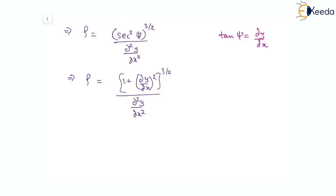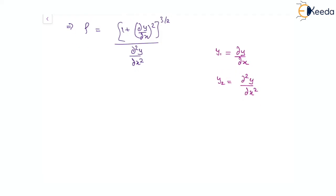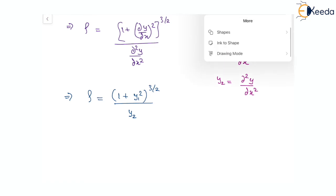Now, if we consider y₁ as the first derivative of y with respect to x and y₂ as the second derivative, then the radius of curvature can be given as ρ = (1 + y₁²)^(3/2) divided by y₂. So this is the expression which we are looking for.